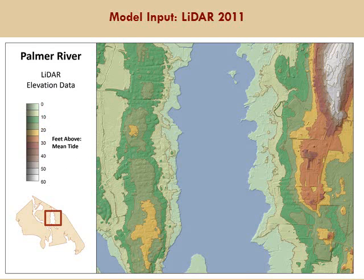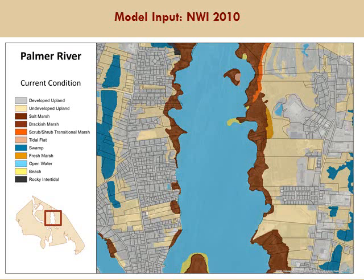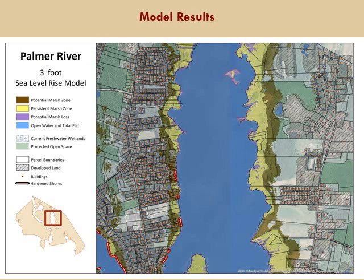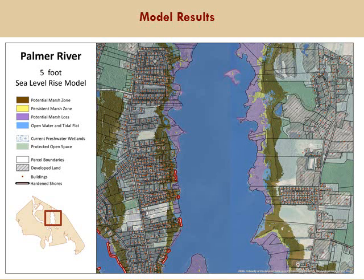Another example: Palmer River in Warren and Barrington. A lot of marsh up there. One foot, three feet, and five feet of sea level rise. That's pretty much the end of my presentation.